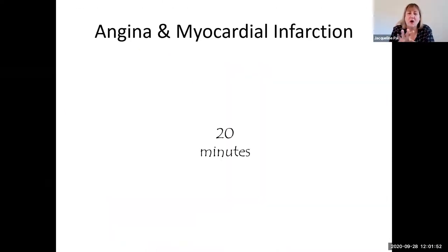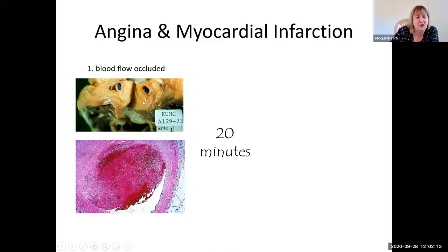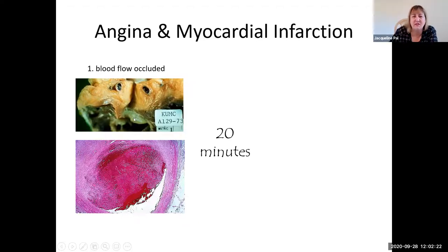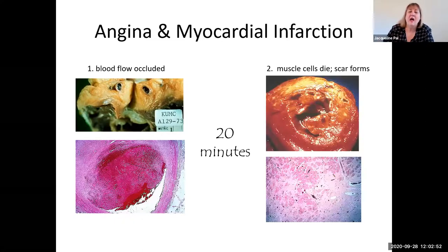Leaving the brain and moving to the heart, we have angina — the pain associated with insufficient blood flow to the heart — and myocardial infarction, which is the heart attack. That takes 20 minutes of insufficient blood flow to the cardiomyocytes to occur. Here is a cross section of a coronary artery showing a thrombus that has formed. Microscopically, an older thrombus includes the blood vessel wall and has started becoming organized. At the site of this old thrombus, the lumen has changed from being about 40% occluded to closer to 80% occluded.